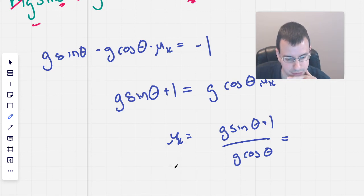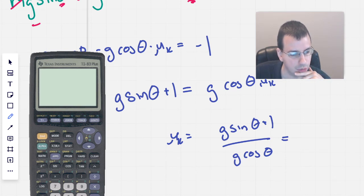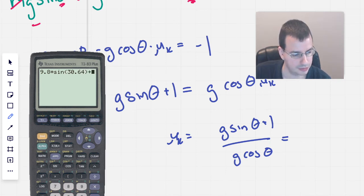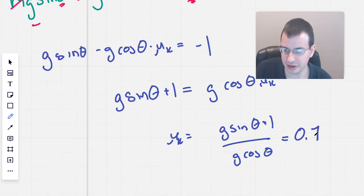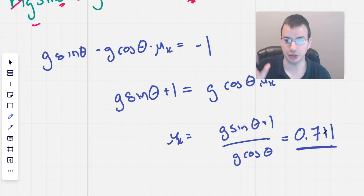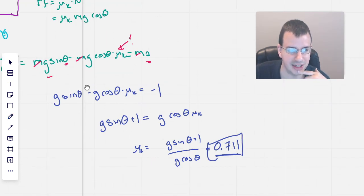That will give us, it's 30.64 is the theta. So we'll do 9.8 times sin of 30.64 plus 1 divided by 9.8 times cos θ, 30.64. And I get 0.711. There's no units associated with coefficient of friction. It is a ratio. So I think the coefficient of friction will be 0.711.